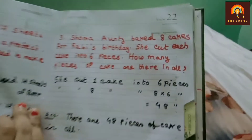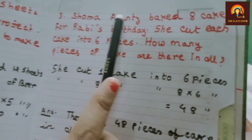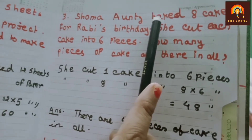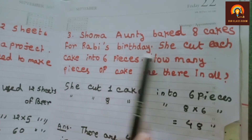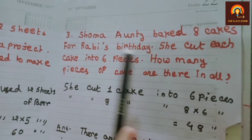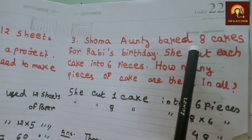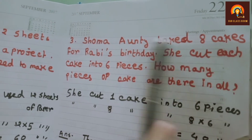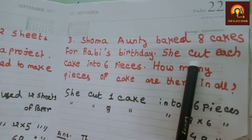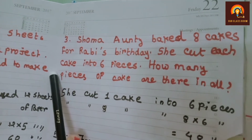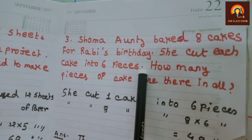Next. Shoma aunty baked 8 cakes for Robeer's birthday. Shoma aunty made 8 cakes. She cut each cake into 6 pieces.